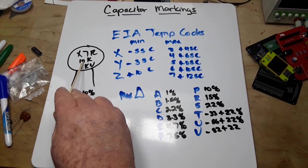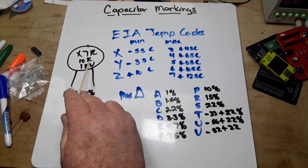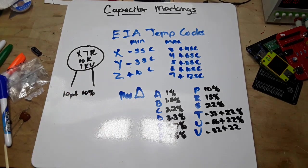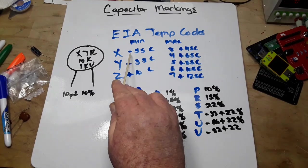So here's our ceramic disc capacitor: X7R 10K 1KV. We know that is 10 picofarad at 10% at 1 kilovolt. Now we need to look at our temperature codes. We have X, which is our minimum temperature of minus 55°C.